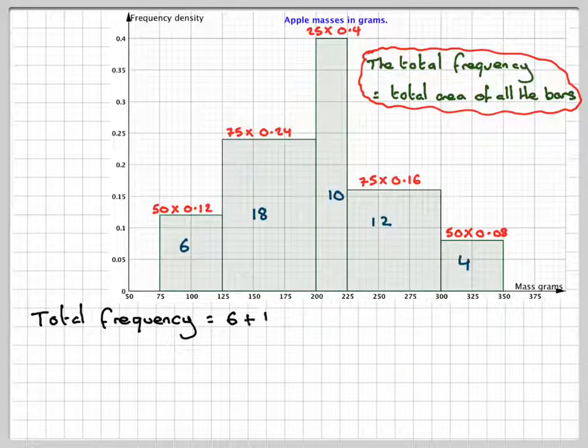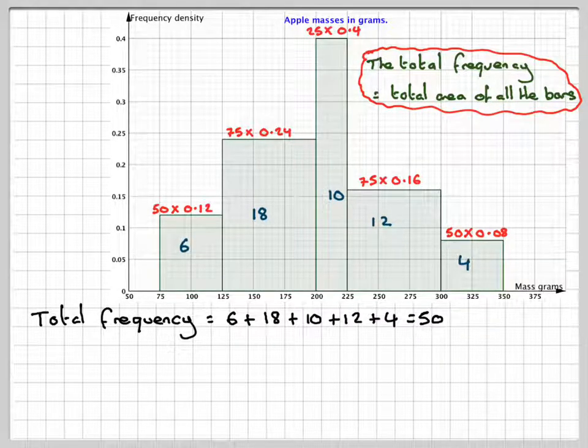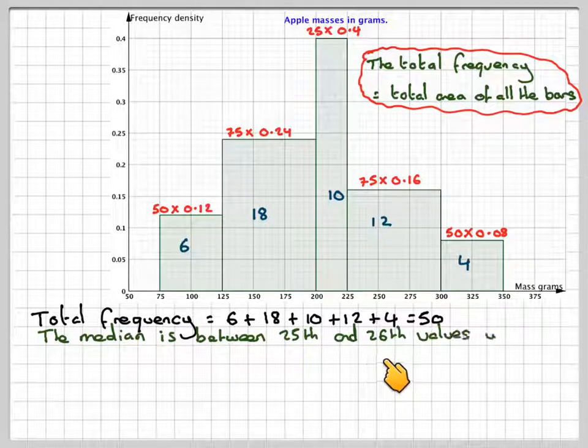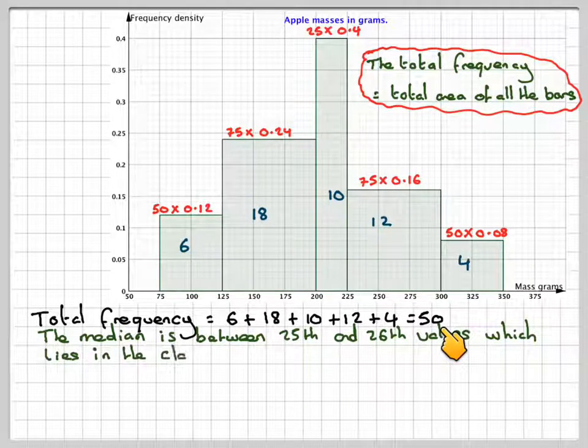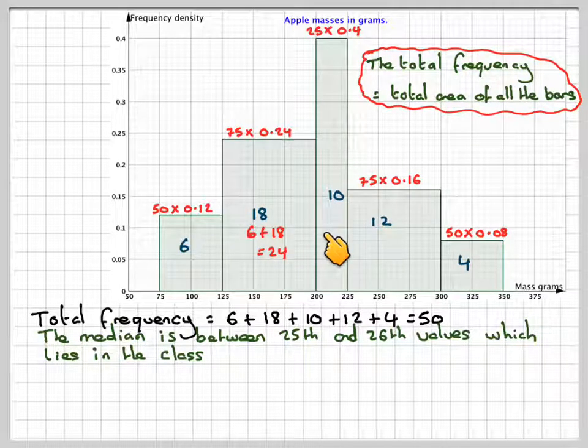So the total frequencies is going to be 6 plus 18 plus 10 plus 12 plus 4, which is equal to 50. The median is now between the 25th and the 26th value, because there's 50 altogether. Now which class is that in? Well, 6 plus 18 will give me 24, so it's going to actually be somewhere in this class here.